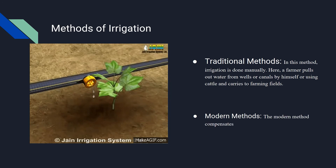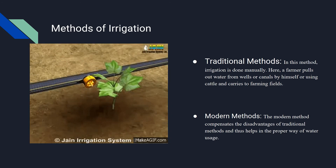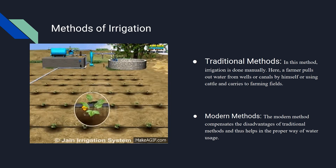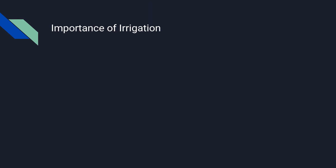Modern method of irrigation: The modern method compensates for the disadvantages of traditional methods and thus helps in the proper usage of water. The modern method involves two systems: the sprinkler system and the drip system.